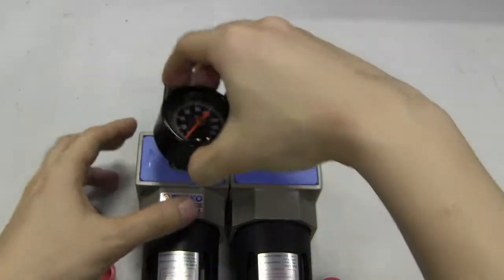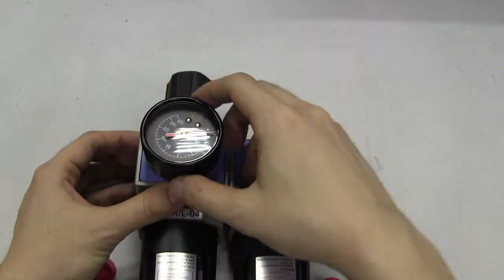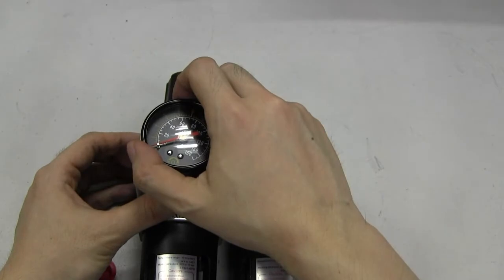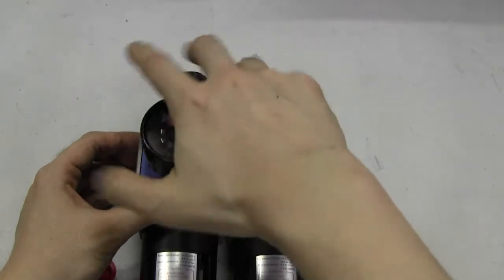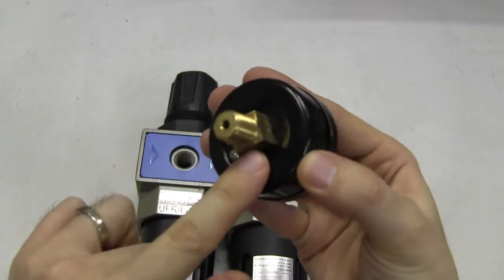When you're going to install the pressure gauge, make sure you put Teflon tape first. You can hand tighten that at first, but for the final tightening do not use your hands. Use an open wrench to tighten. I think this is a 14mm wrench that you're going to use.